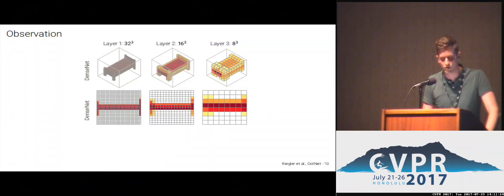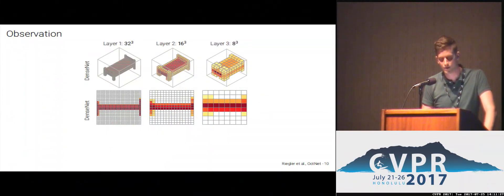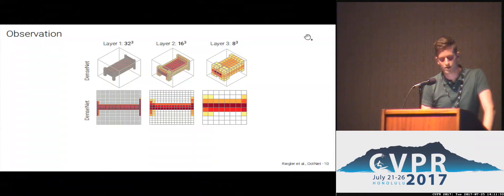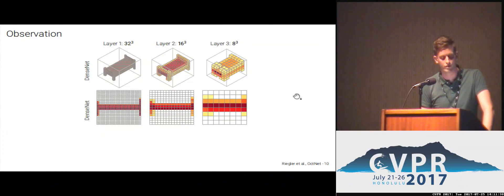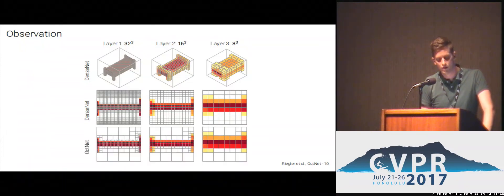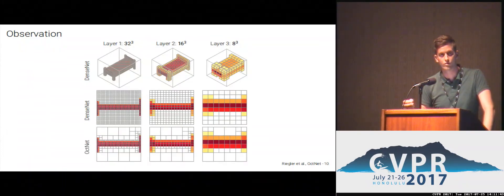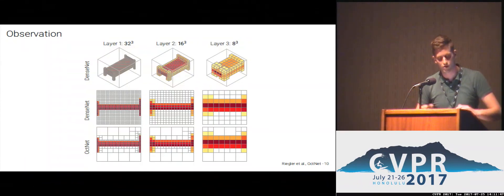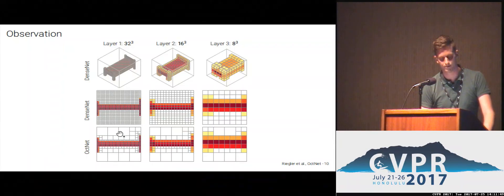We made the following observation: we trained a simple classification network on ModelNet and looked at the activations after each pooling layer. As you can see in 3D and 2D, the activations are mostly near the surface. So the idea is to focus the memory consumption of the network, but also the computation and power near the surface, and share everything else farther away.